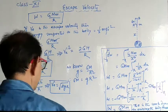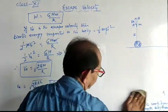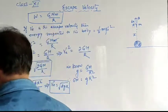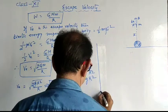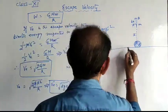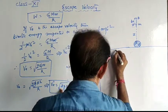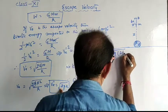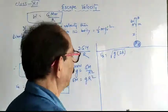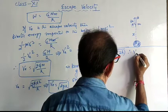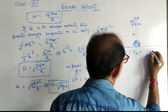Now the third equation. Ve can be written as the square root of g times 2R. Since twice the radius equals the diameter D of the Earth, Ve equals the square root of g times D. This is the third equation.